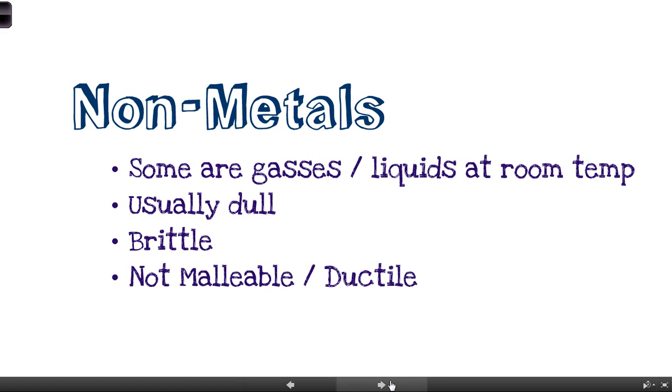Non-metals. So a lot of these are gases. Bromine, I think, is the only liquid at room temperature. But they're usually dull, they're not usually shiny, and they're brittle, which means if we try to bend them, they will snap or crack or break. And they're not malleable or ductile. That's kind of just saying that again, that they're brittle. They will break or crack when we try to bend them or stretch them.